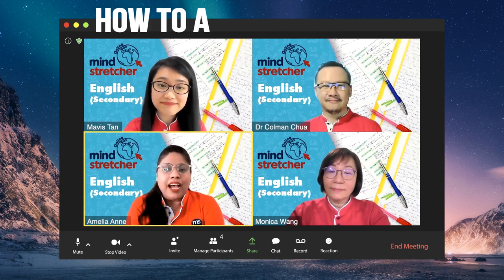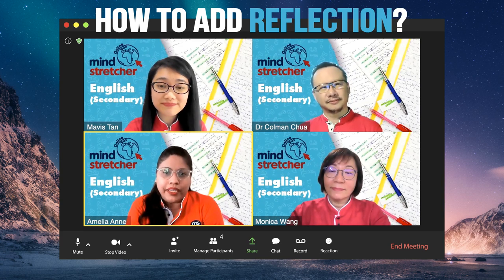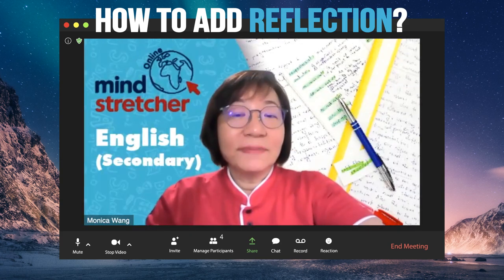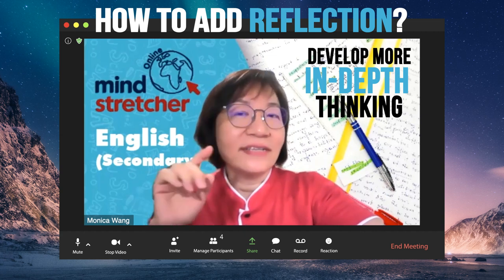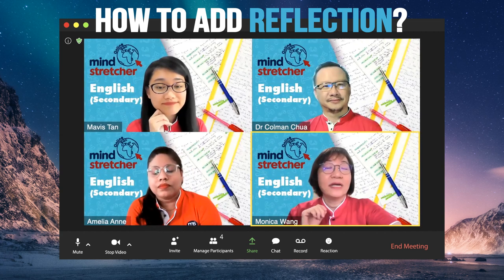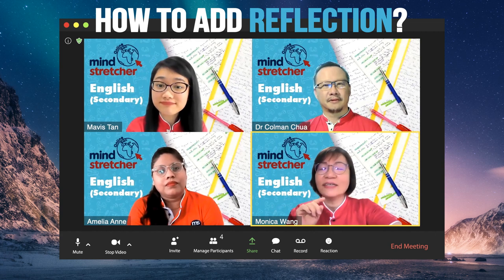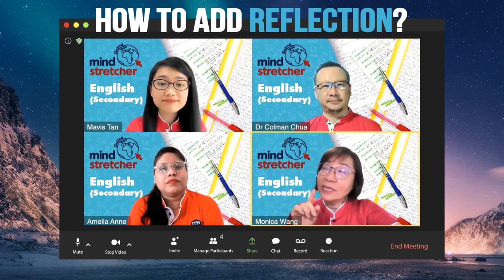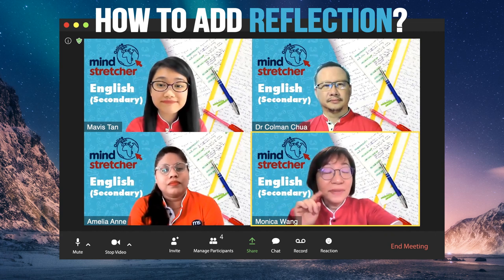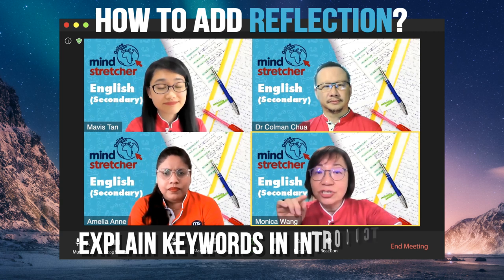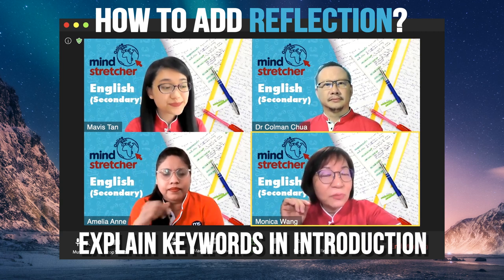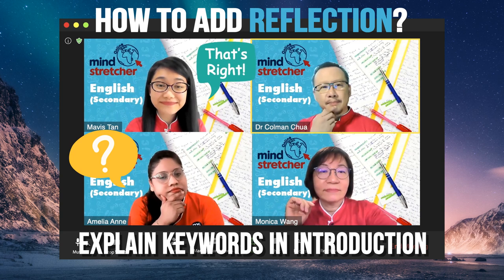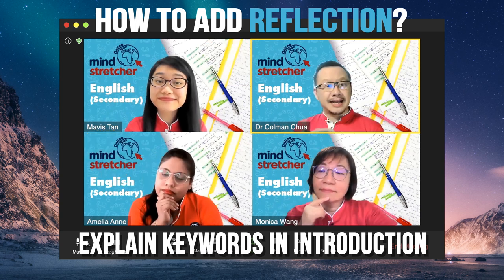But how can our students go about doing that? To put it simply, our students need to develop more in-depth ways of thinking in their essays. They must show understanding of the theme given. This means, even in the introduction, they must explain keywords. Perhaps you can give us an example?